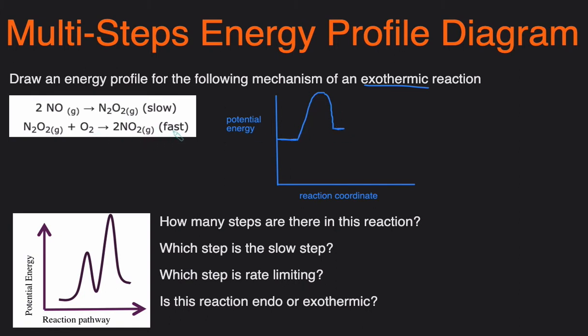Now the second step is fast. So if it's fast it's going to have a smaller activation energy. We're going to make the hump smaller and then it tells us this reaction overall is exothermic. So if it's exothermic it means that the product is going to end up lower than the reactants. We'll say that the product is down here and then all we have to do is just connect the curve.